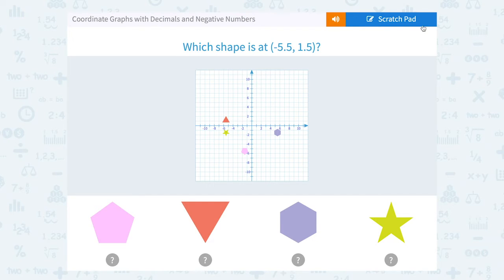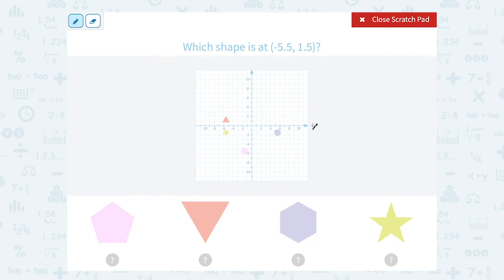Okay, well keep in mind that the x-axis goes from left to right, and the y-axis goes up and down. So when we have an ordered pair, it's always in the form x, y, and that means that the first number, or the x value, tells us how many to go right or left.